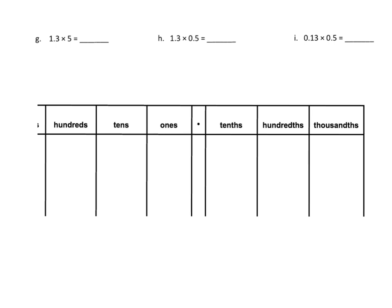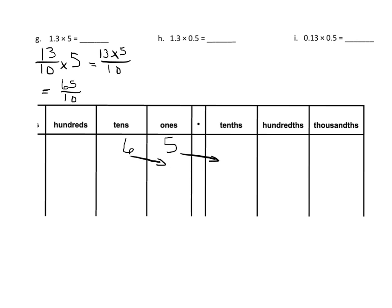Now we're going to practice. The first one is 13 tenths times 5, and that's going to equal 13 times 5 over 10, so that's 65 over 10. Now 65 over 10 — because our denominator is 10, that means each digit is going to get moved one place to the right, because we're making it smaller by a tenth, by dividing by 10 or multiplying by a tenth. And so that gives us 6.5.